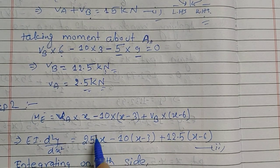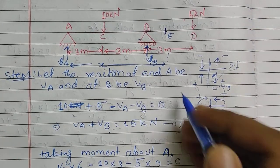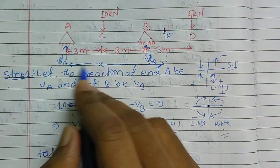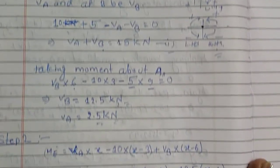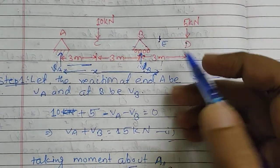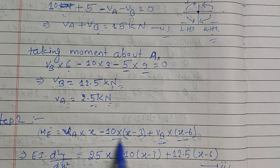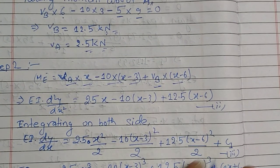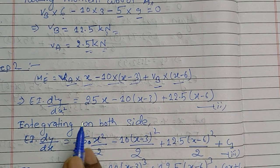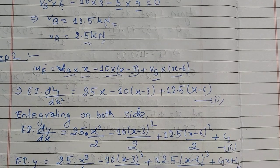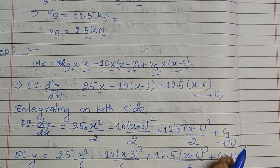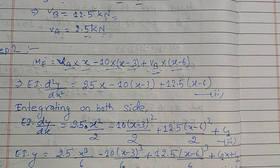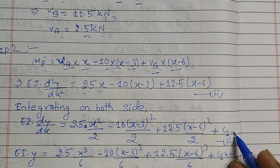The distance terms are: VA at distance x from A, and the 10 kN load at distance (x − 3). We integrate the moment equation twice to obtain the equations for slope (dy/dx) and deflection (y), introducing constants C1 and C2. In the next step, we apply boundary conditions to find these constants.